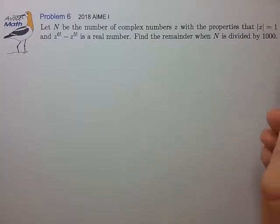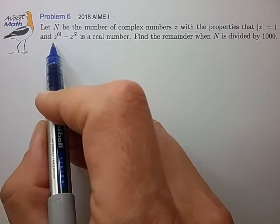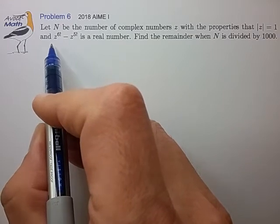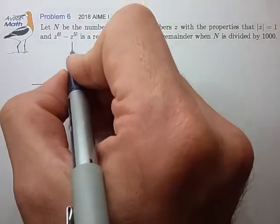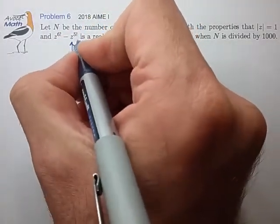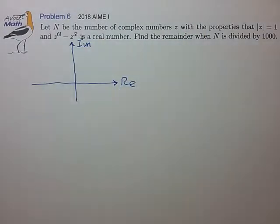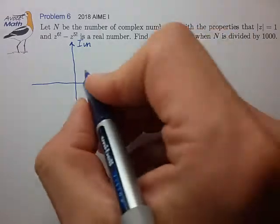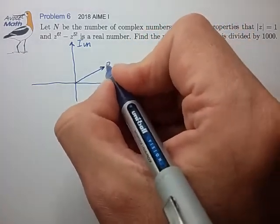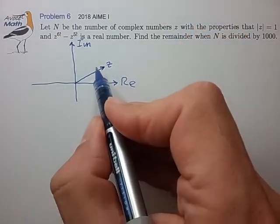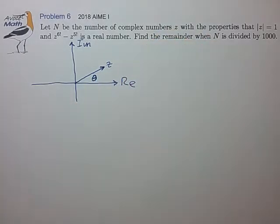We're dealing with complex numbers of length 1 and powers of that number, so it probably makes sense to look at these numbers on the complex plane. Let's take a look at what this looks like. We have the imaginary axis, the real axis, and we have this number z. Let's just place it somewhere for convenience. It has length 1, and it looks like we're going to have to use DeMoivre's theorem here, so let's specify that z has some angle theta.